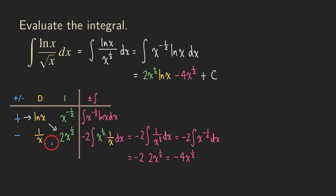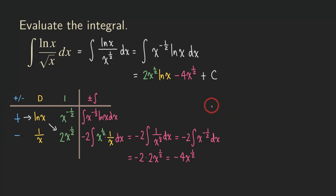As you can see, using the tabular method can be really convenient, and the process becomes trivial when the function only requires integration by parts once. Next time I'll do another example that requires a few more rounds of integration by parts — but using the tabular row integration by parts method simplifies the process a lot. Thank you for watching, and if you like this video, please subscribe to my channel. See you next time.